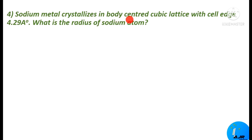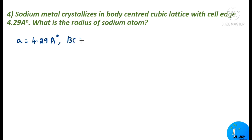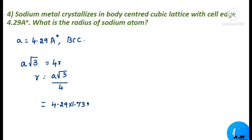The next problem: sodium metal crystallizes in a body centered cubic lattice with cell edge 4.29 angstrom units. What is the radius of the sodium atom? Here they are asking for the radius from the edge length; the substance is sodium with BCC structure. Given: A = 4.29 Å, BCC structure. For BCC, A√3 = 4R, so R = A√3/4. Substituting: R = 4.29 × 1.732 / 4 = 1.857 Å, which simplifies to approximately 1.86 angstrom units.